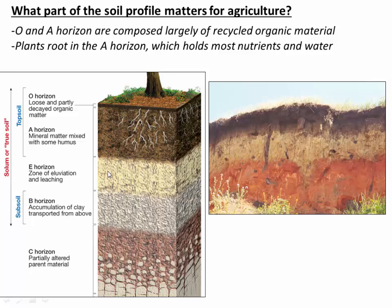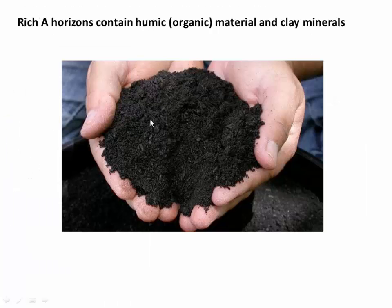Which part of the soil actually supports agriculture? It's the A horizon. The A horizon is composed largely of organic material and it's where a lot of the nutrients and water are held. Everything we talk about today is happening in this A horizon. A really rich A horizon might contain a beautiful humic substrate made of organic material and clay particles.